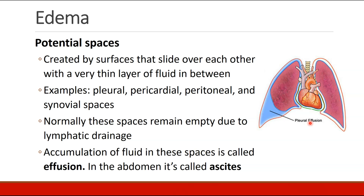But if fluid accumulates in these spaces, it's called an effusion. So you can have a pleural effusion, or a pericardial effusion, or a synovial effusion. In the belly, it's not called a peritoneal effusion, it's called ascites.